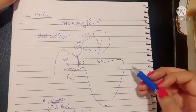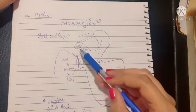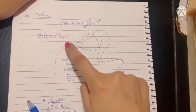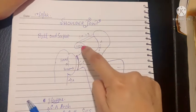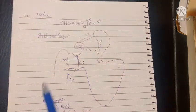The first factor is the coracoacromial arch. Basically, the coracoid process and the acromion process are lying just above the shoulder joint. Superior to the shoulder joint is the coracoacromial arch, and these two processes are almost parallel to each other.